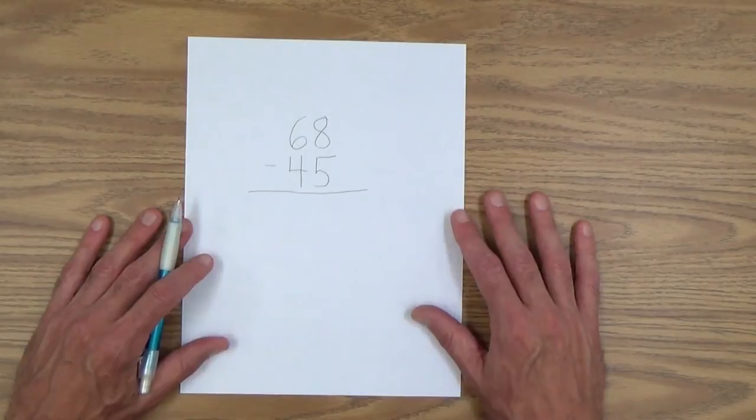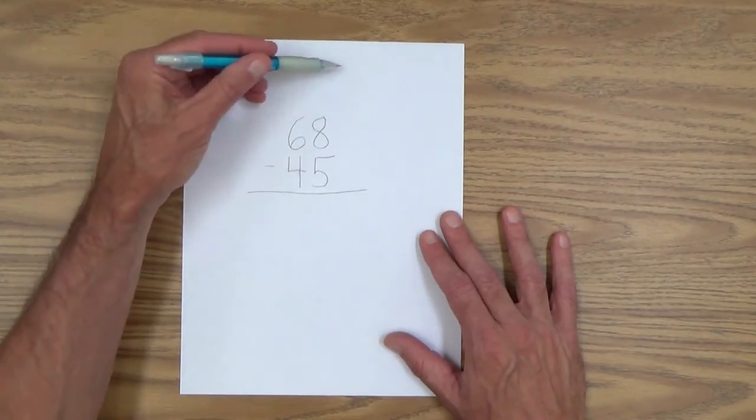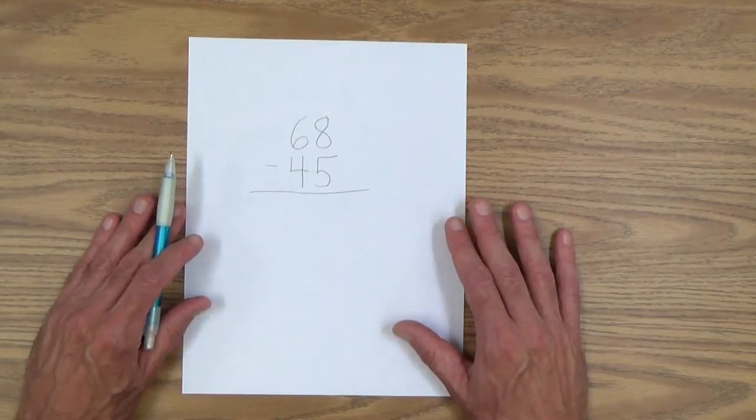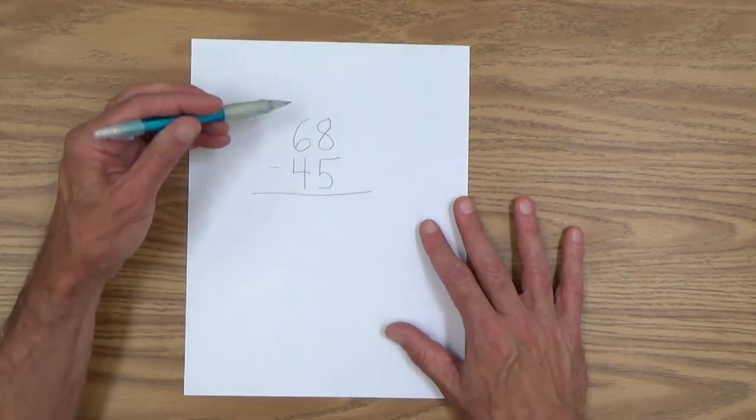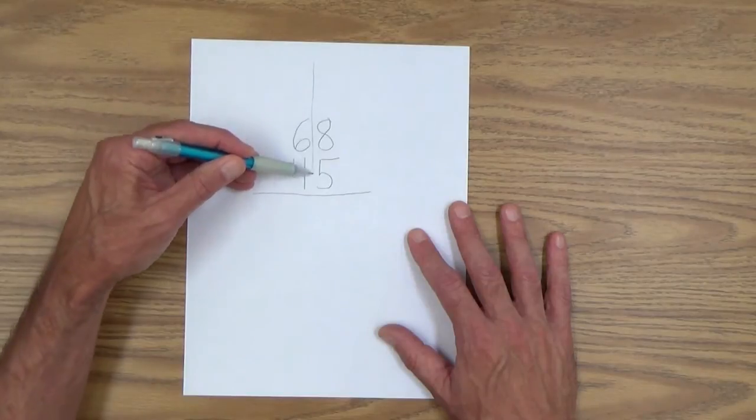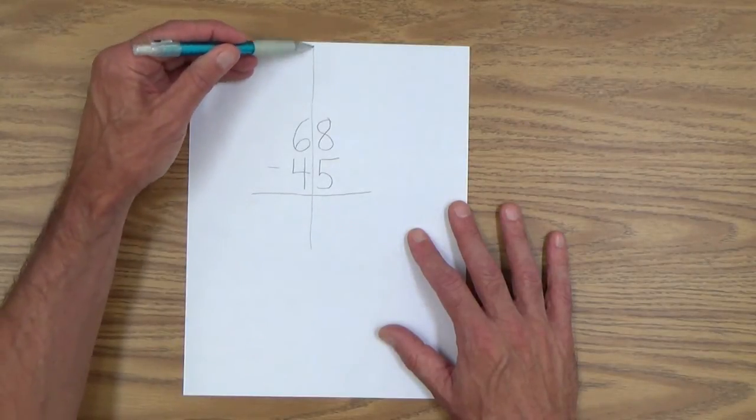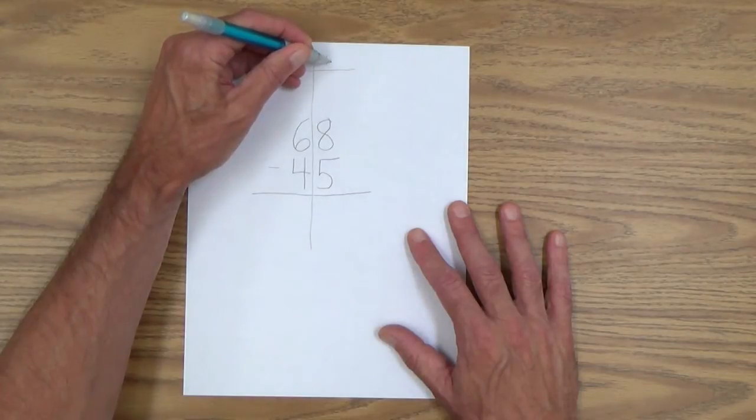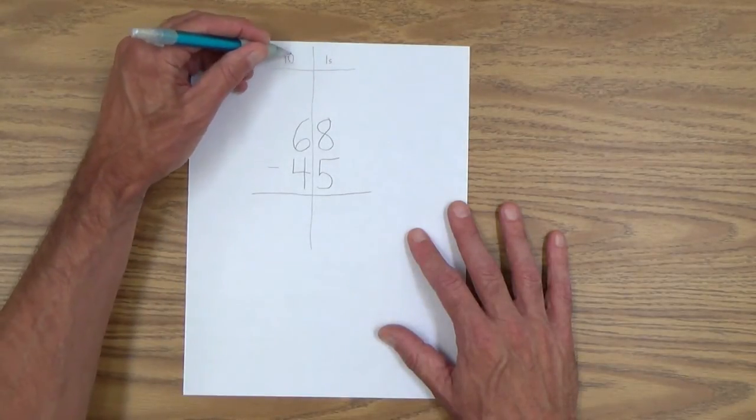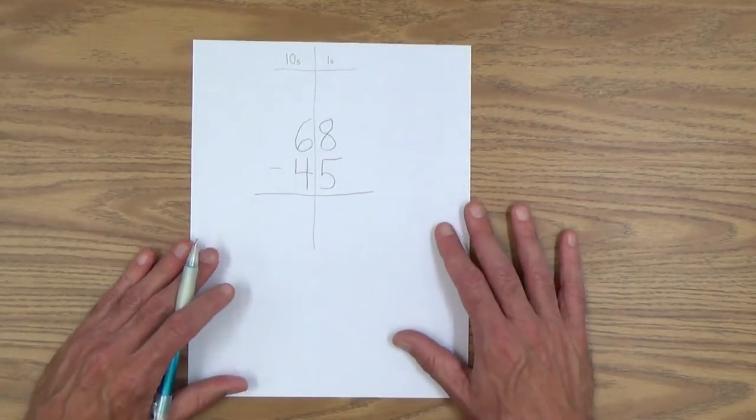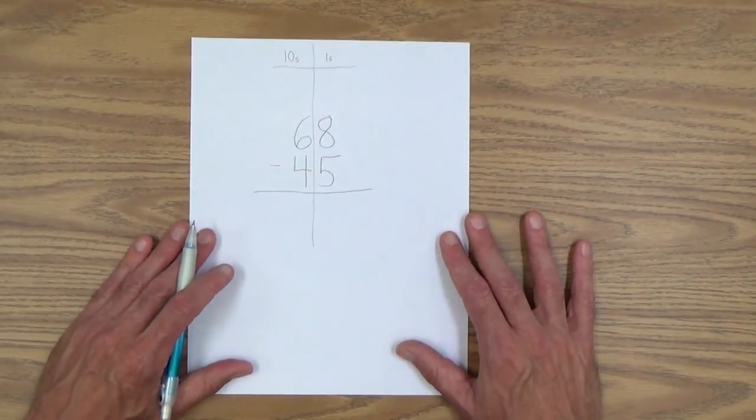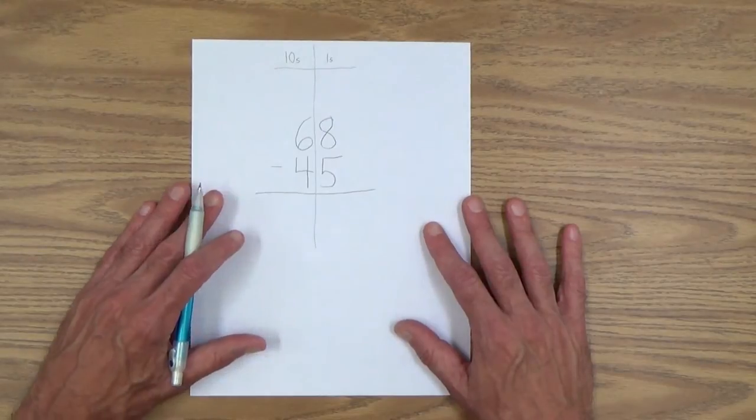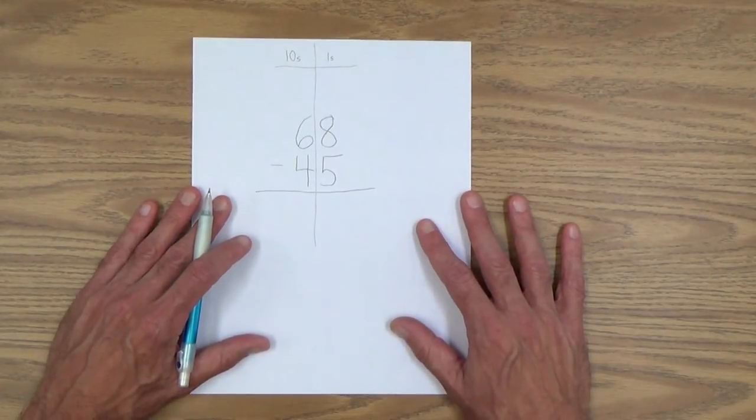And she may want to just jump in without all the support stuff. And she may be able to do that. But maybe for the first one, have her put it in. So you want to put the line through here. Up here, you want to make sure that he or she knows that's the ones column. That's the tens column.